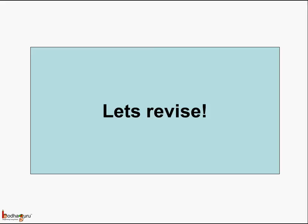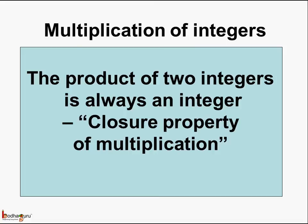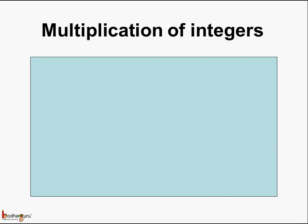Now let's revise what we learnt today. First, we learnt about the closure property, which says the product of two integers is always an integer. So 2 multiplied by minus 3 is equal to minus 6, and here the product is an integer, that is minus 6.